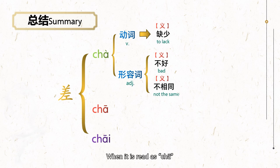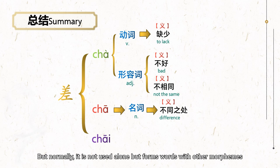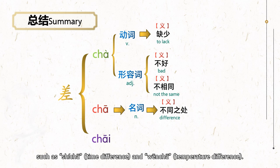When it is read as chā, it is used as a noun that refers to difference. But normally, it is not used alone but forms words with other morphemes such as 时差 and 温差.